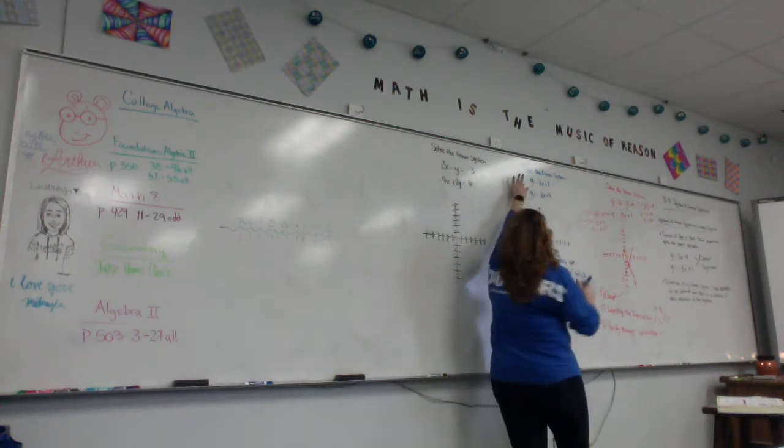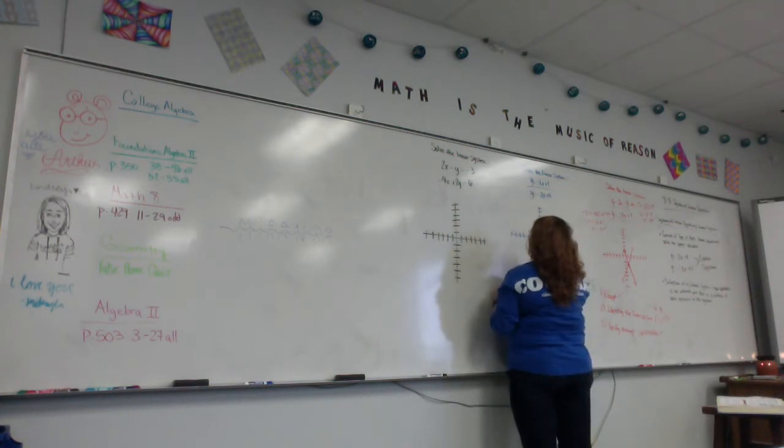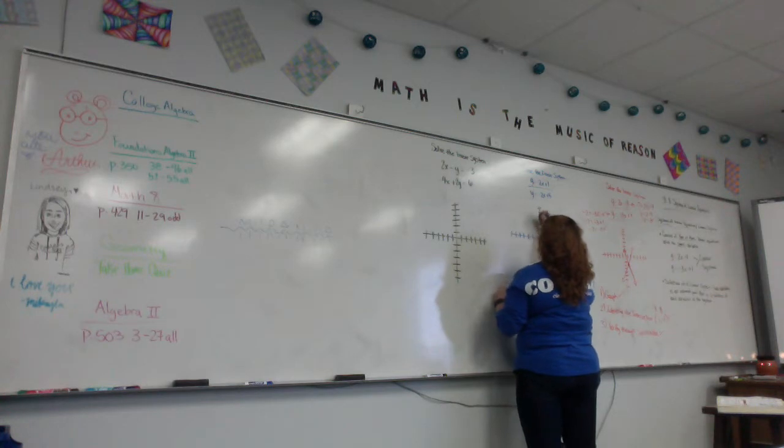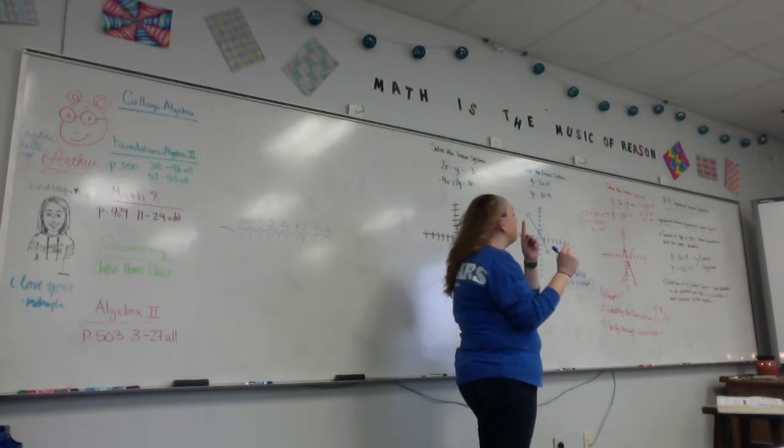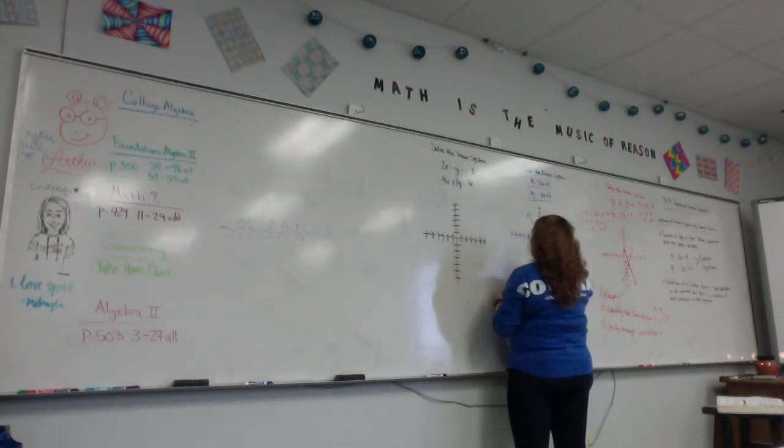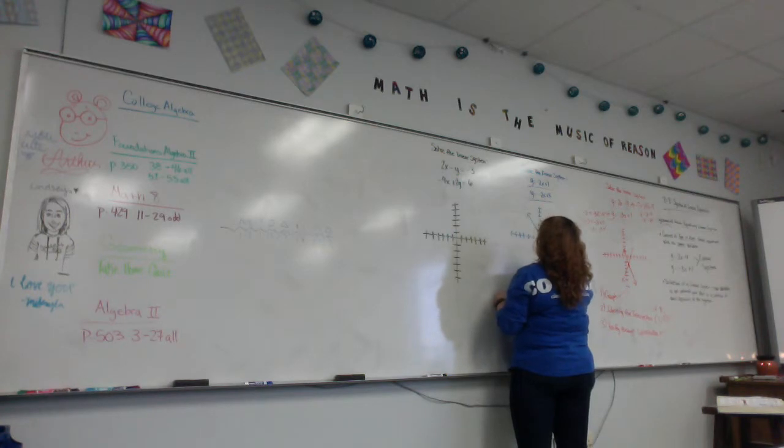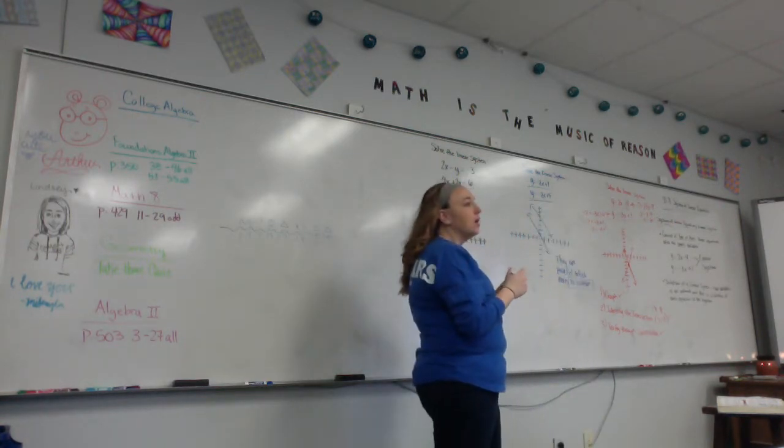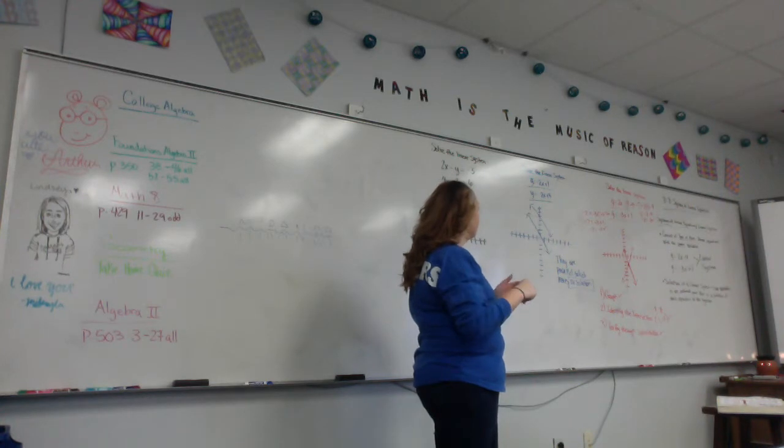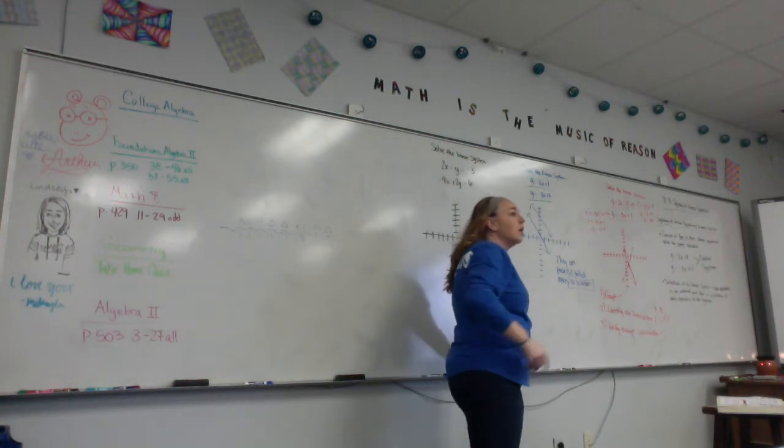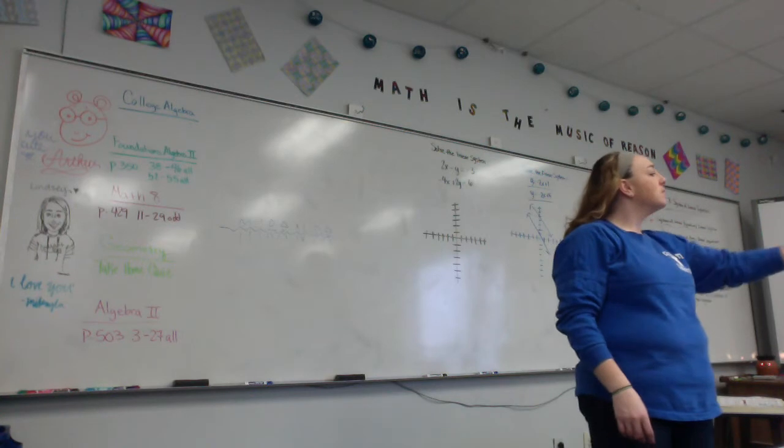If I graph this one, I start at positive 1, right? Down 2 over 1. So this line is going like this, right? And on this one, I start at positive 5. And I go down 2 over 1, right? And so this line again is like this.